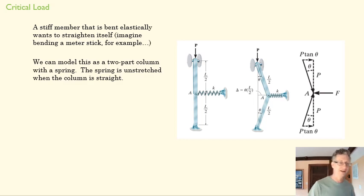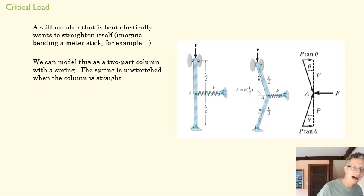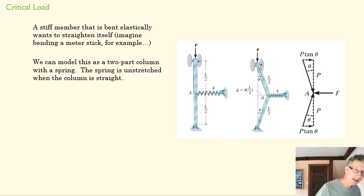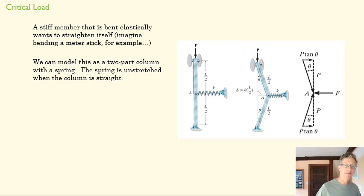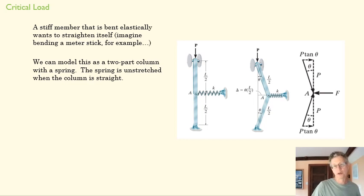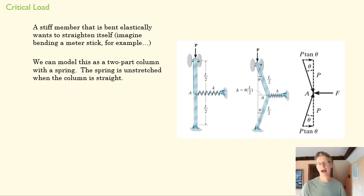We can model this with a spring, which is in some ways a silly model because we don't have springs attached to our columns, but it provides a nice starting point. The force P is now directed partly in the X direction, pushing off to the right. That pressure P goes along the member directed downward, while the reaction is directed upward and to the right. The overall X-direction force created by P is rightward, and the column's tendency to be straight and return to its original position is effectively what creates the spring restoring force pushing back against P.